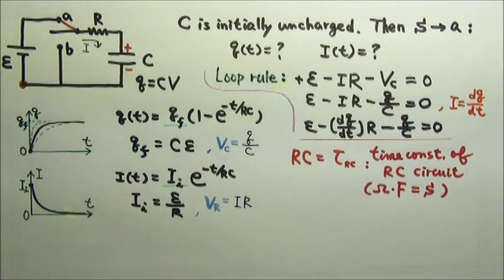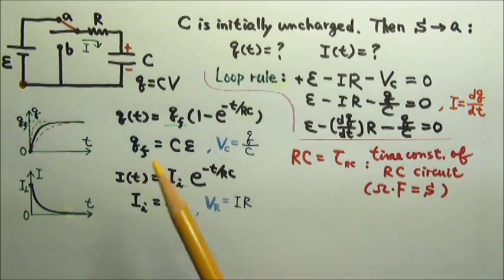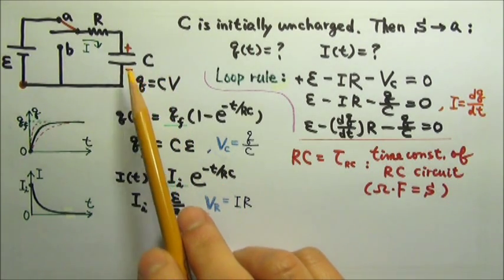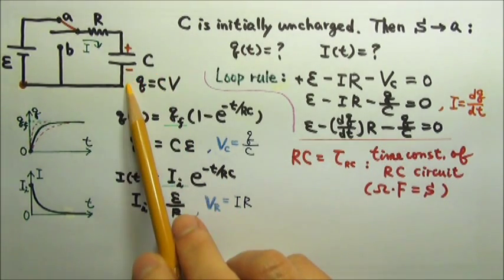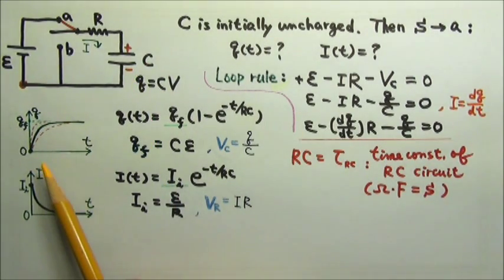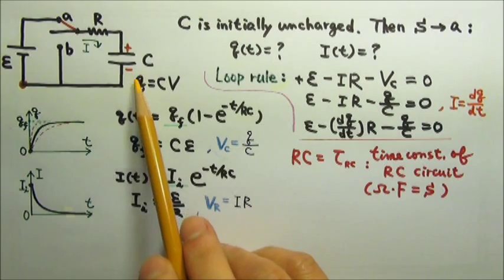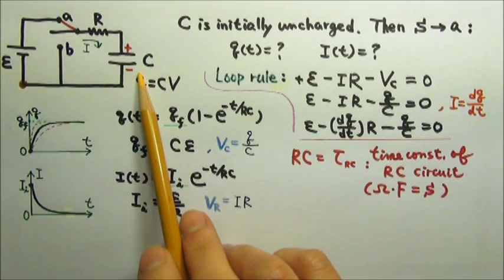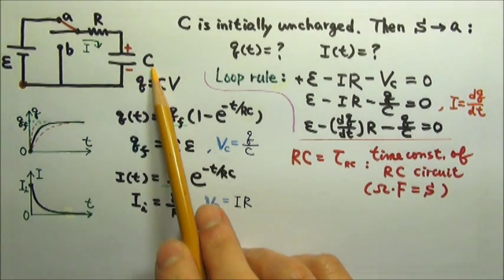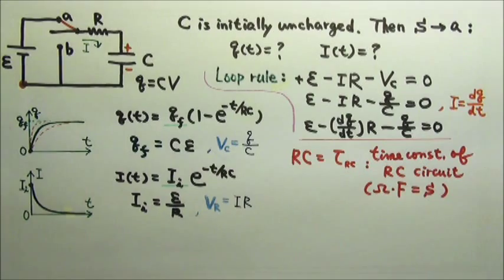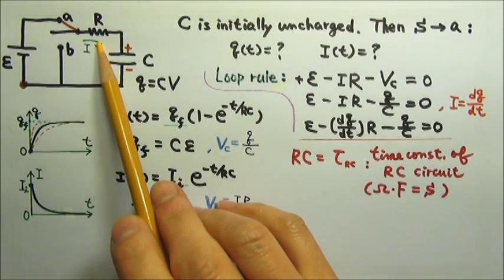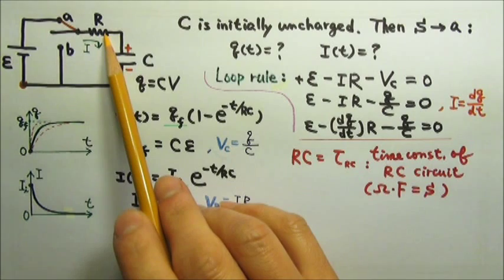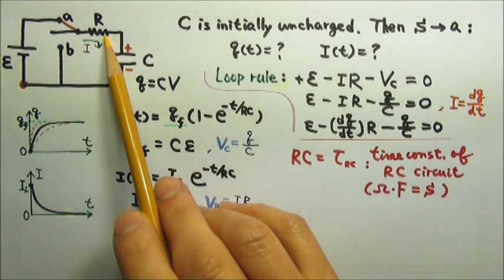We may also see a problem involving a combination of capacitors — say, two capacitors in parallel instead of a single capacitor. All of this will still work; we just have to use the equivalent capacitance of the combination for C. Similarly, if we have a combination of resistors, we can just use the equivalent resistance for R.